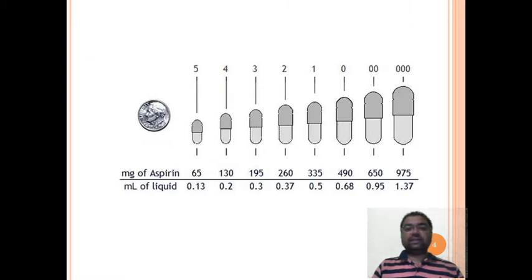This is a classic example of aspirin and capsule sizes showing how much aspirin fits in each capsule size. You can observe the largest size, triple zero, occupies 975 milligrams of aspirin while the smallest size only occupies 65 milligrams.